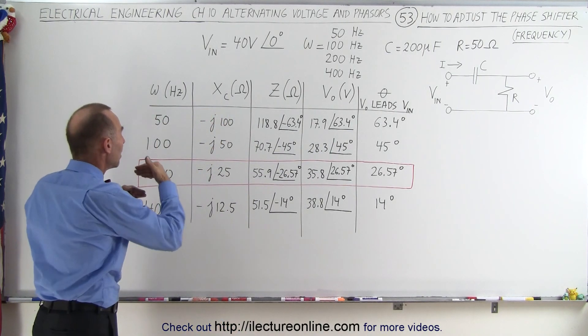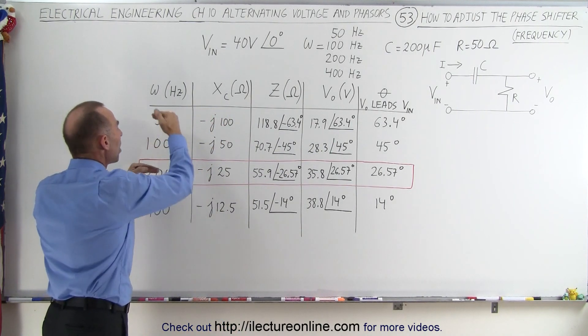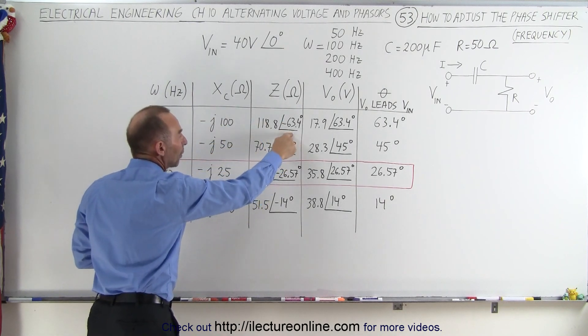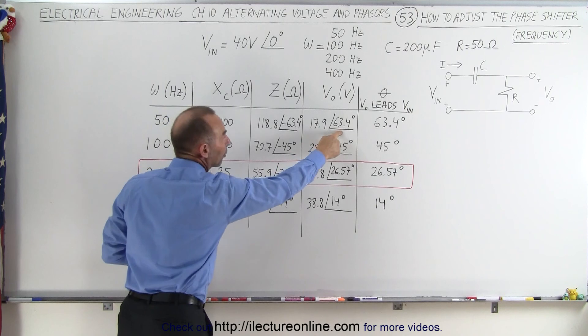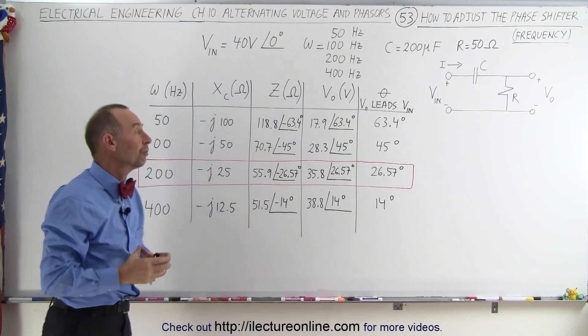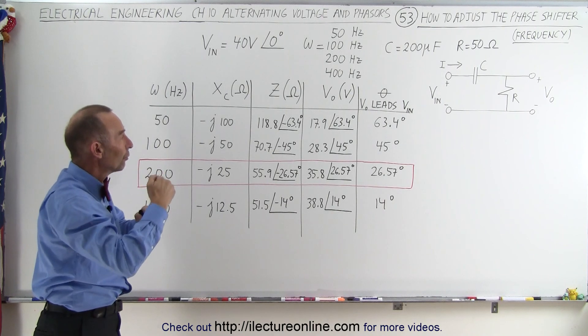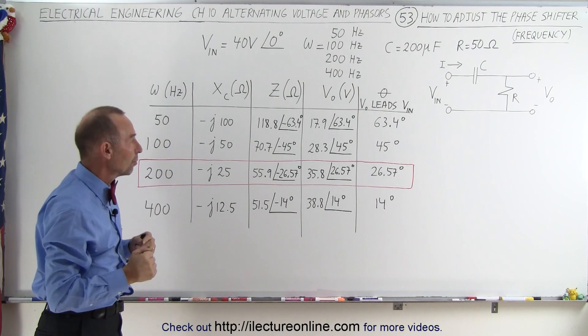So we can see as we make the frequency smaller, we have a larger capacitor reactance, a larger impedance, a greater phase shift on the impedance, and therefore a greater phase shift on the output voltage. But at a cost as the magnitude of the voltage keeps getting smaller and smaller.